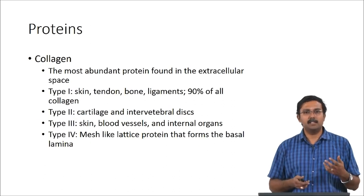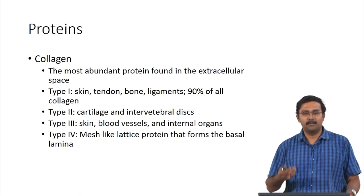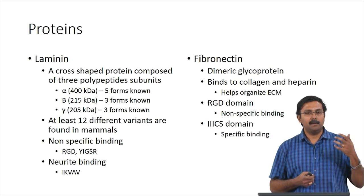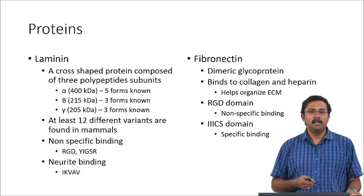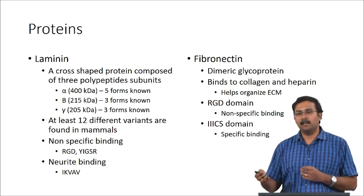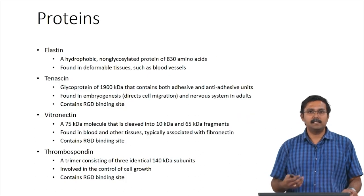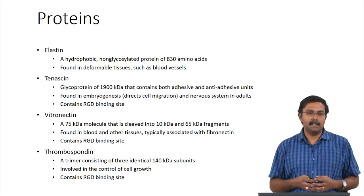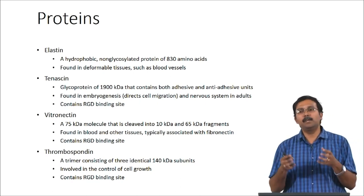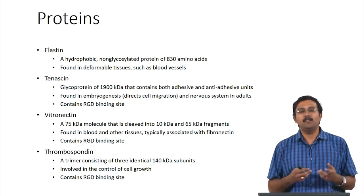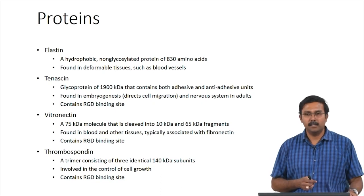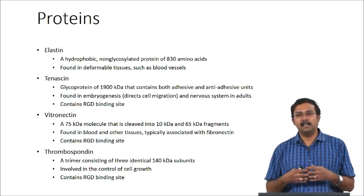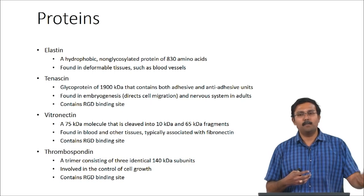Collagen is the most abundant protein in ECM and there are different types present in different regions. Laminin has nonspecific binding and a very high amount of RGD domain. Fibronectin also has RGD domains which help in integrin-mediated cell adhesion. Other molecules such as elastin, tenascin, vitronectin, and thrombospondin are involved in different aspects, and many of them have RGD binding sites. As you can see, RGD is a very ubiquitous ligand seen in many matrix components — that is why it has been extensively studied. If you were looking up strategies to improve cell adhesion, attaching an RGD peptide would be one of the most common strategies.